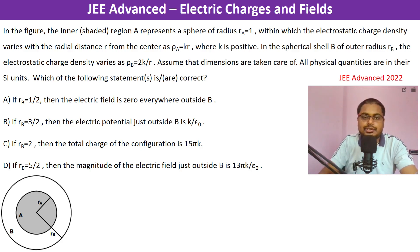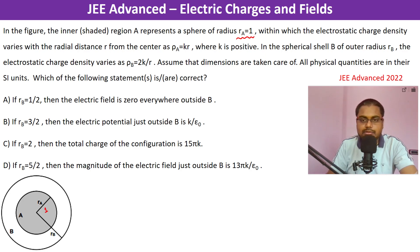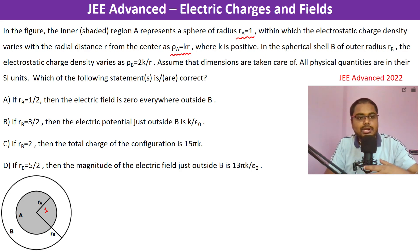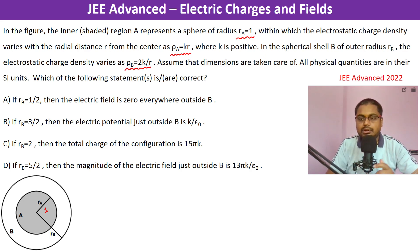In the figure, the inner shaded region A represents a sphere of radius r_a = 1. R_b is given, and the electrostatic charge density rho equals k·r, where k is positive. In the spherical shell B of outside radius r_b, the electrostatic charge density varies as 2k/r. We have to determine which option is correct.